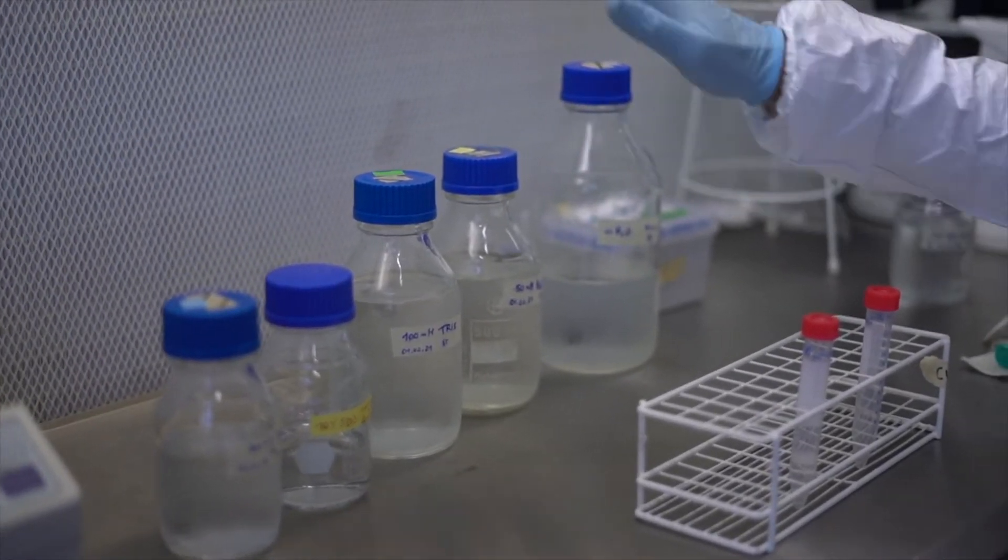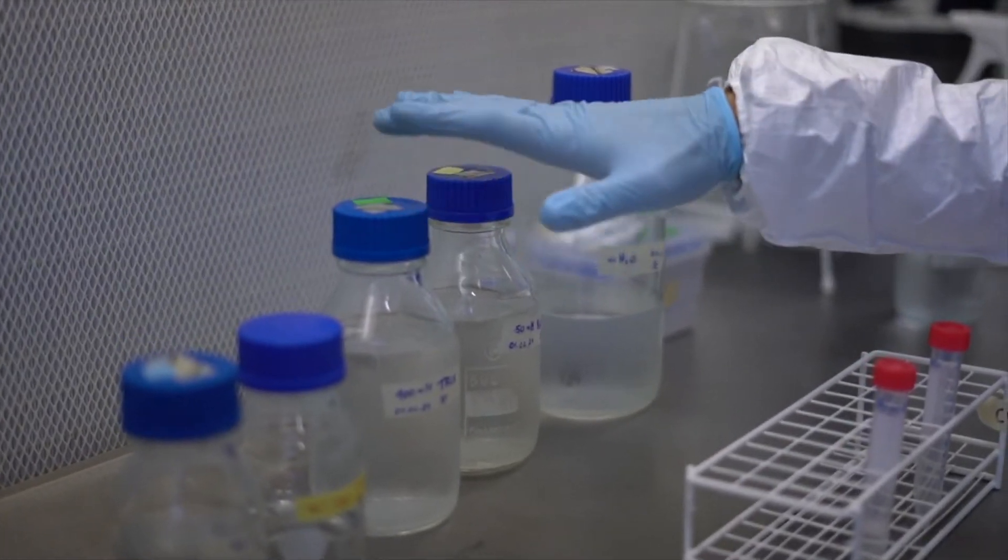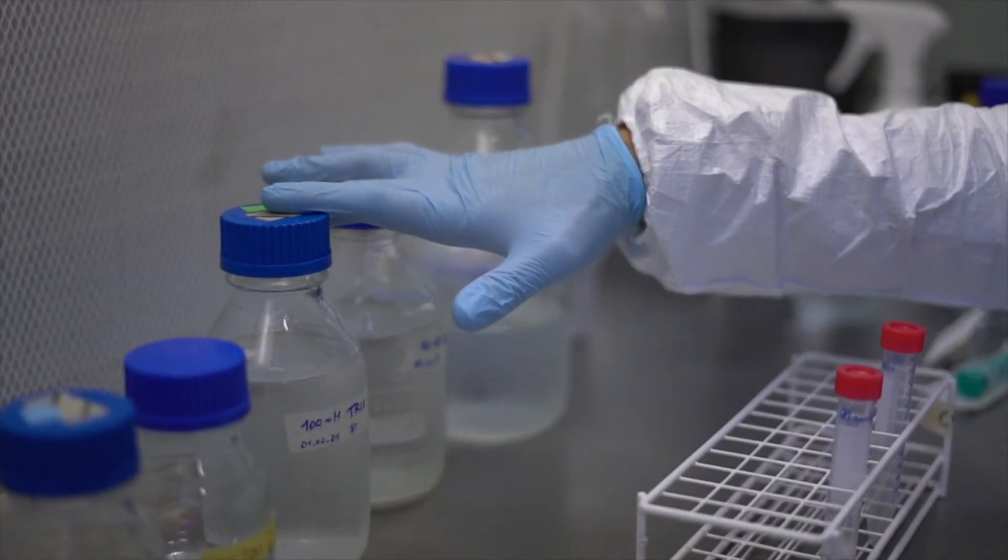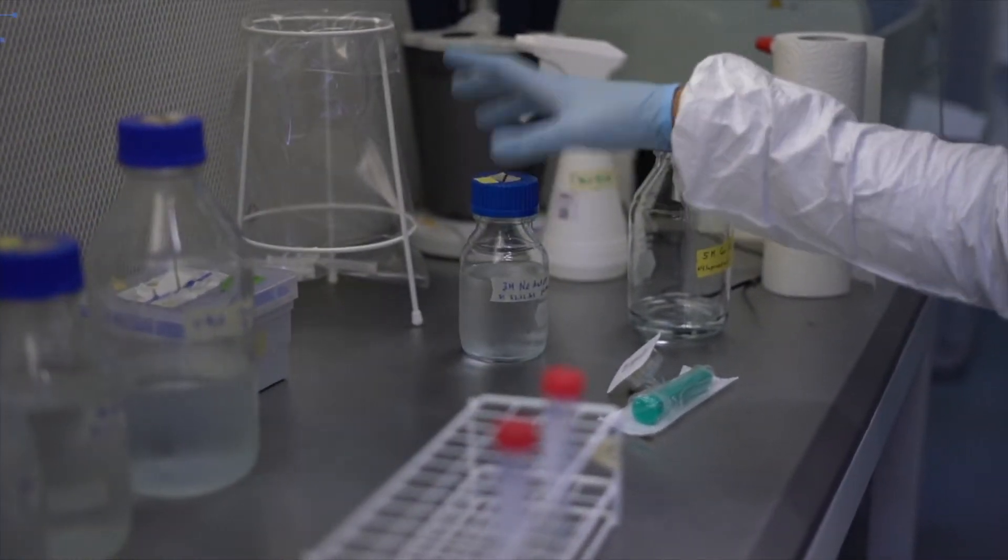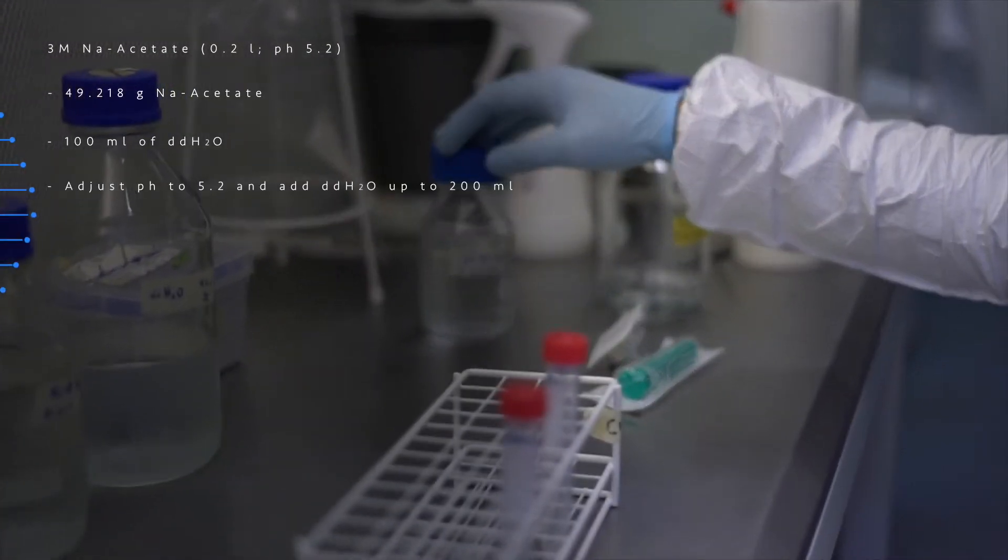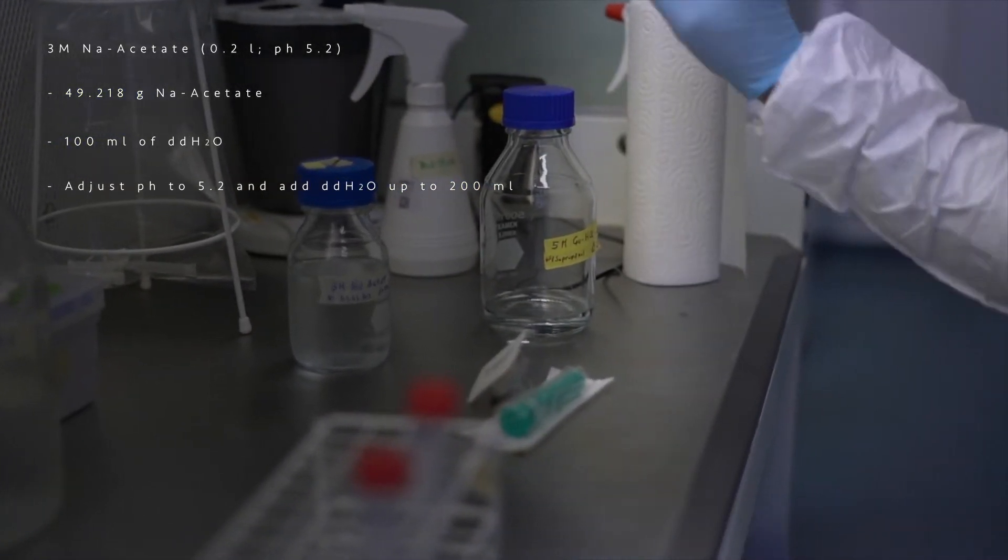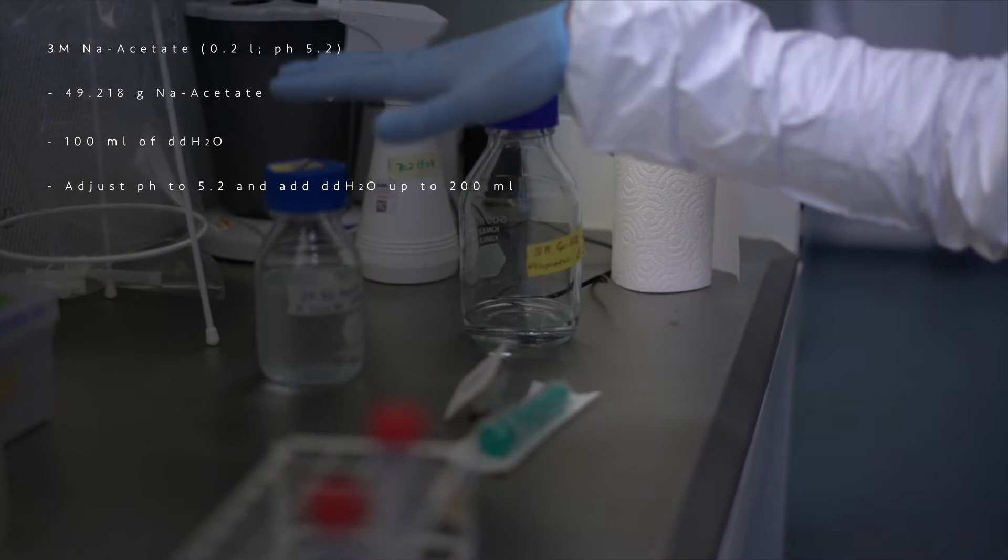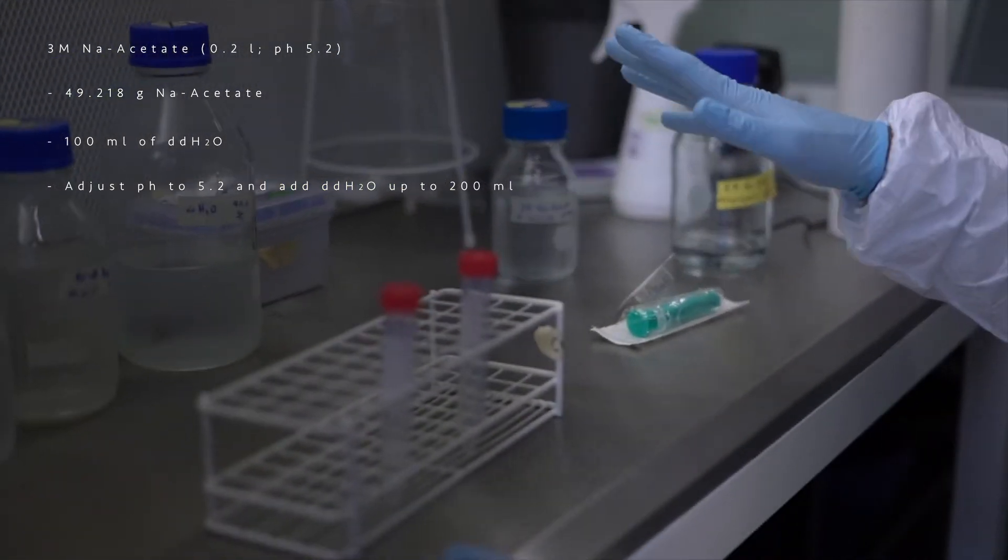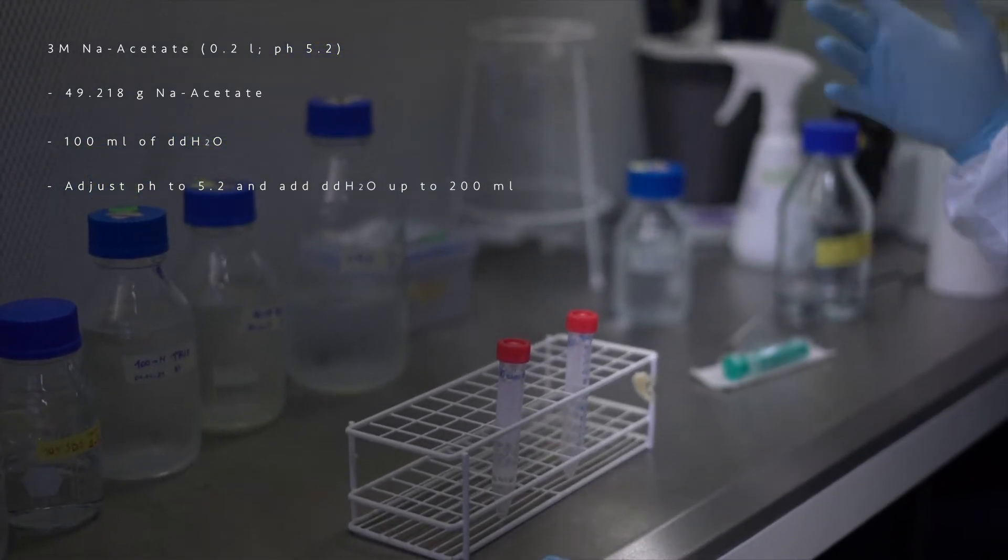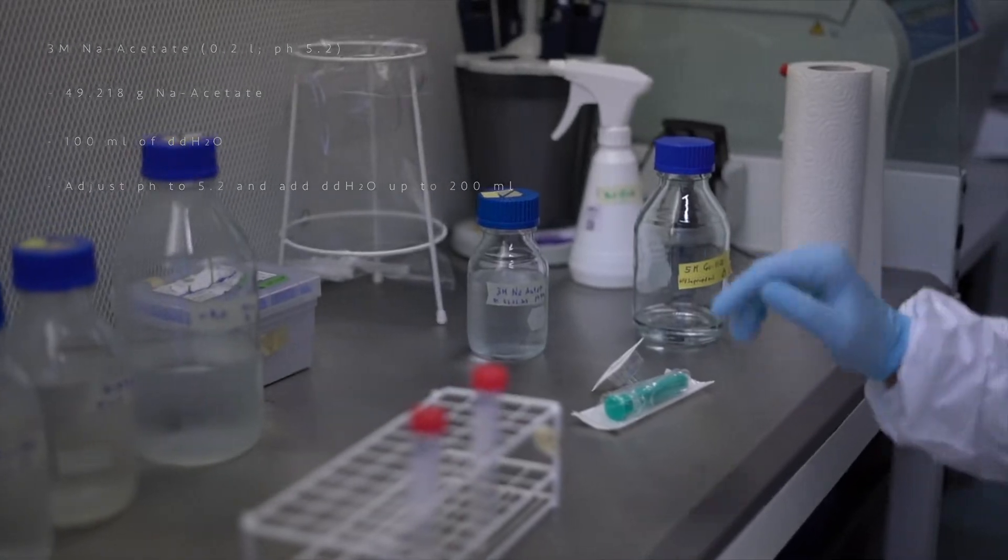We need to prepare beforehand three buffers: the PTB-DTT buffer which is the lysis buffer, we need to prepare it fresh right before starting with the extractions. Then we need two more buffers: sodium acetate buffer and guanidine hydrochloride 40% isopropanol buffer. Those two can be prepared in advance and stored in the fridge. Those we are going to use tomorrow during the continuation of the protocol.